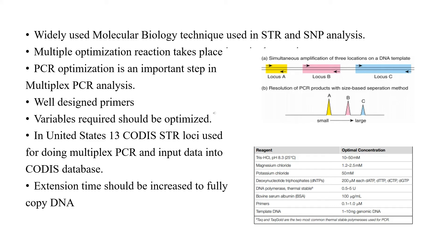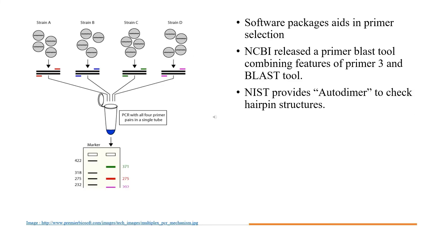This PCR procedure saves money and time and expedites forensic casework in labs. Several software packages aid in primer selection. The National Center for Biotechnology Information (NCBI) recently released a combined Primer-BLAST tool that enables finding specific PCR primers by combining features of Primer3 and BLAST software. NIST provides Auto-Dimer to check hairpin structures.